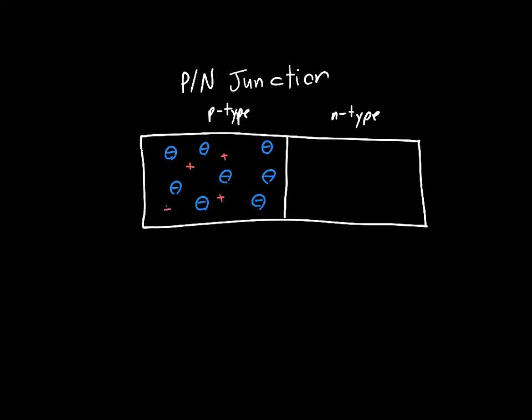We said that some of these holes are going to diffuse into the N-region, and similarly some of the electrons in the N-type semiconductor are going to diffuse into the P-region. That's going to leave behind what's called the depletion region.